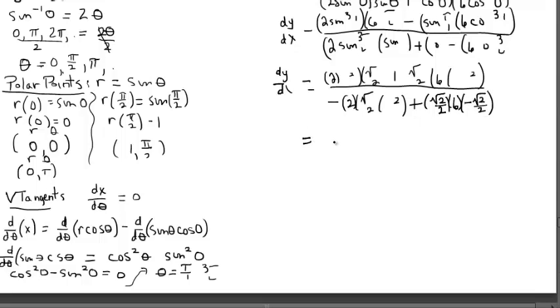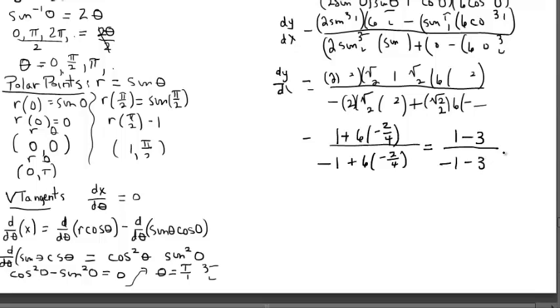And cleaning it up a little bit. Eventually I got to one plus six times negative two fourths and negative one plus six times negative two fourths. That cleaned up to one minus three on top and negative one minus three on bottom and completing the calculations, I had a half.